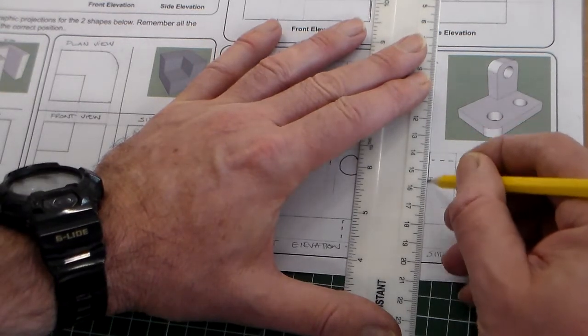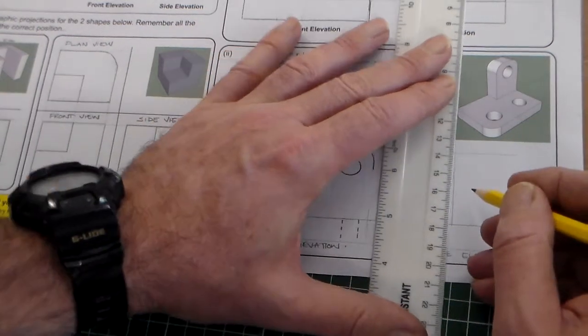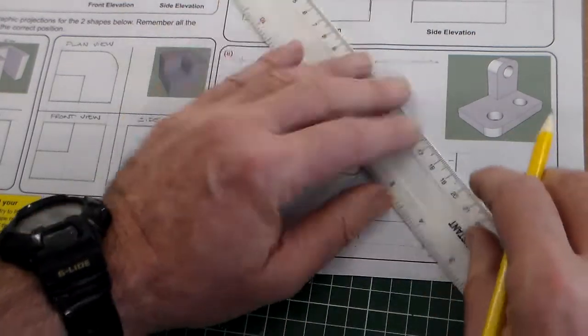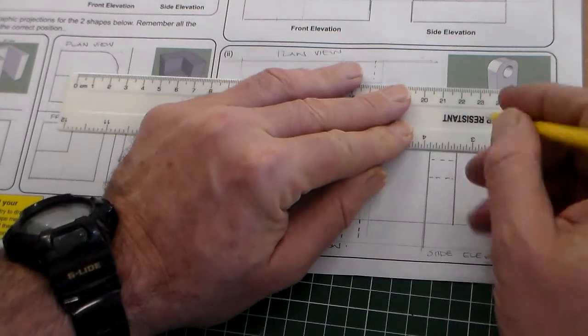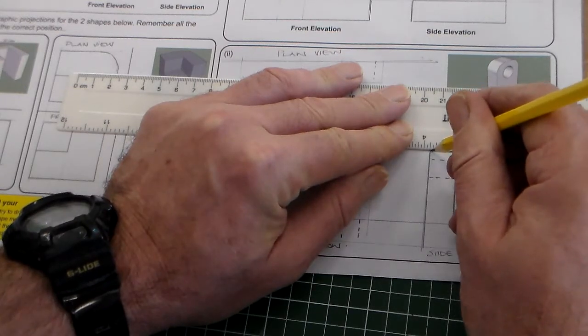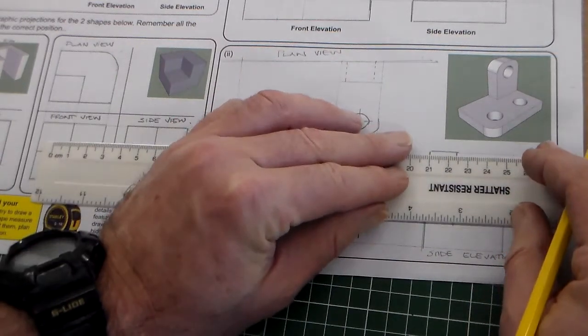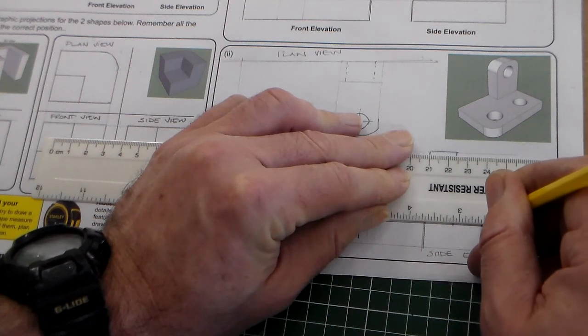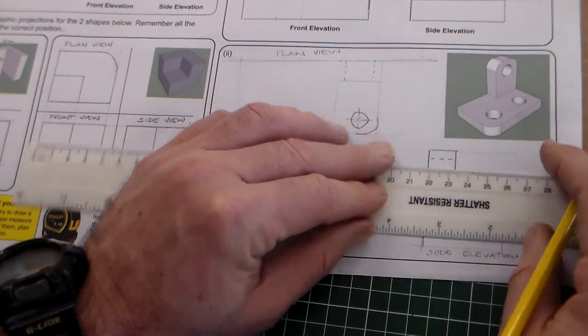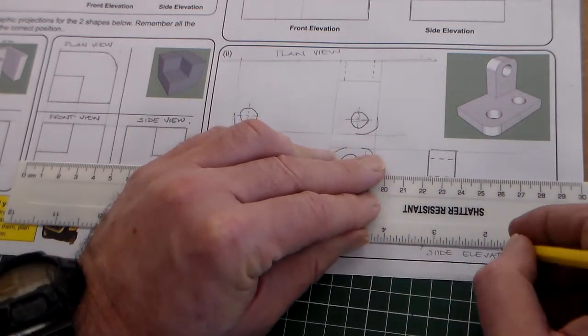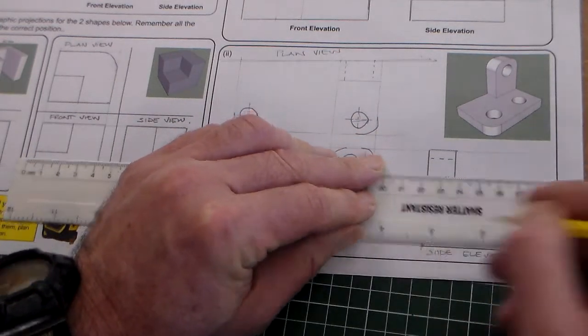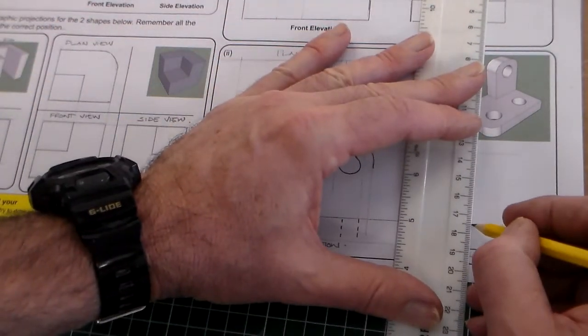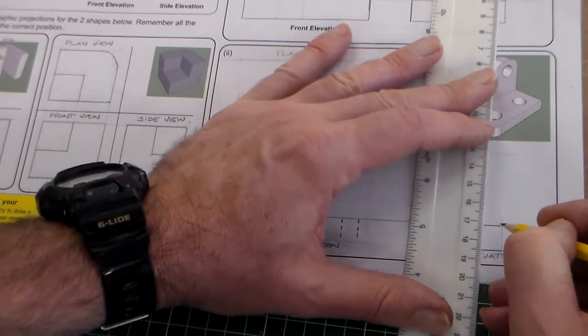Then it's just a matter of... you could use H2, harder pencil for your construction lines. I'm doing all this with an HB. That line will go right across to there if we're looking at that view. We do need to also add our hidden detail for our holes there.